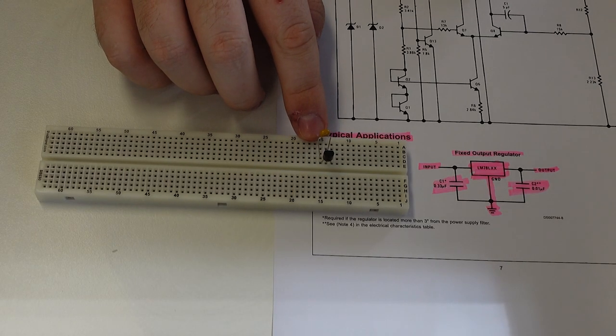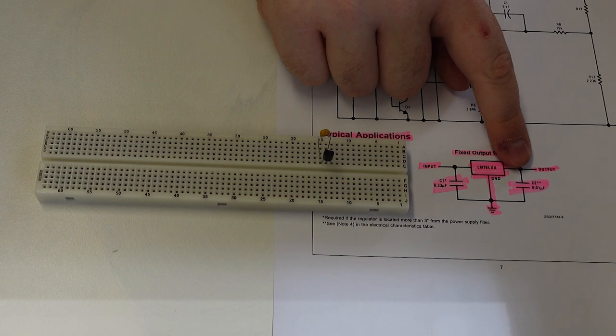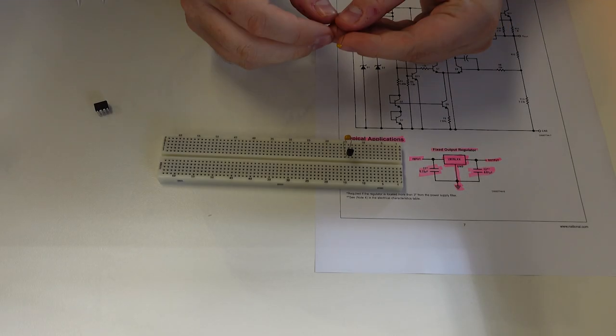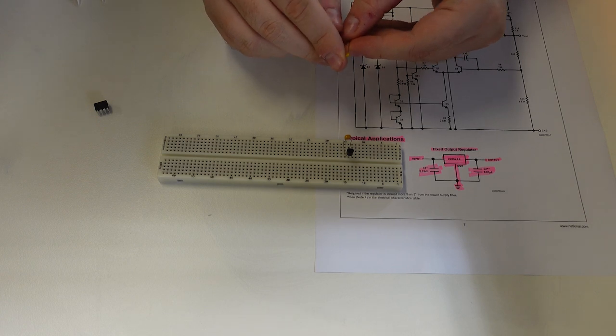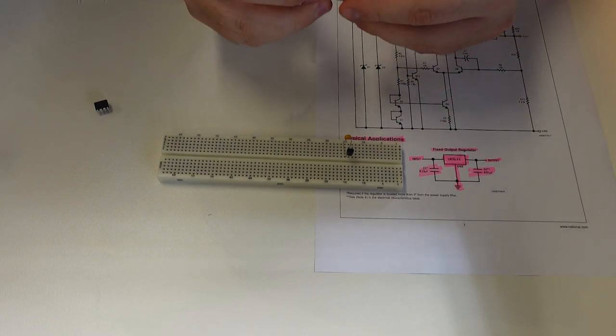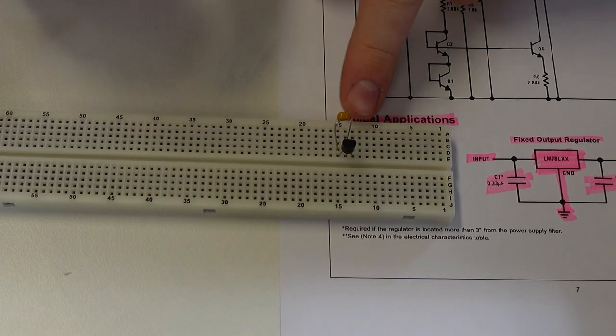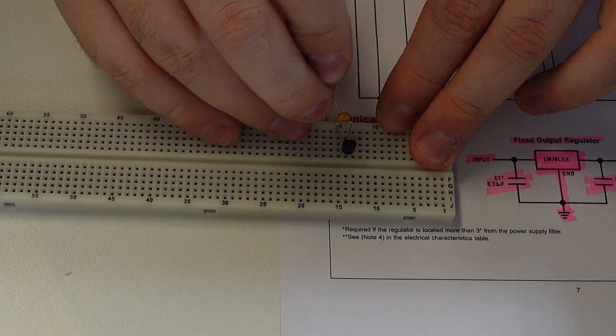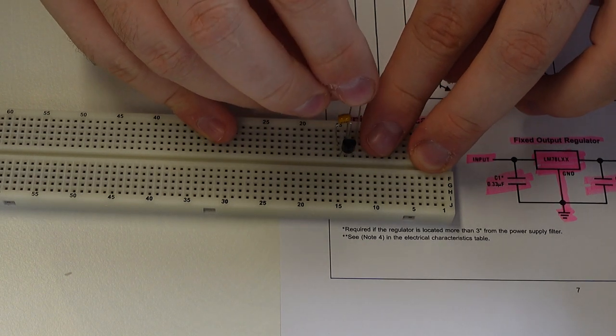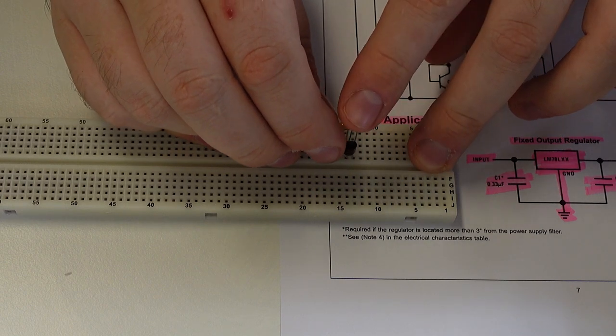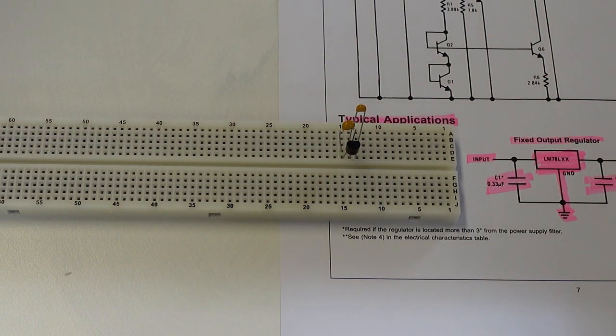The second part we need to connect is our output capacitor, which is indicated by C2. This is 0.01 microfarad. In that case, we've got a 104, which corresponds to 0.01 microfarad. Now this capacitor, much like the first one, goes between the ground pin and the output pin. So we can connect between those two terminals on the breadboard. And we'll just make sure they're all standing up nice and straight and they're not touching each other to make sure there's no shorts.